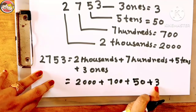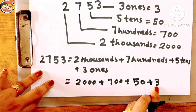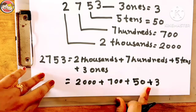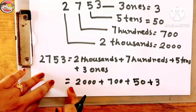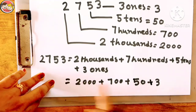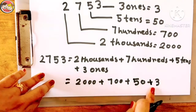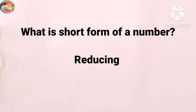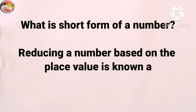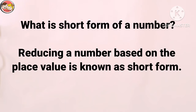So children, this is called expanded form. Did you notice one thing — the place value of each digit is connected to the next with a plus sign. Now, short form: what is the short form of a number? Reducing a number based on the place value is known as short form.